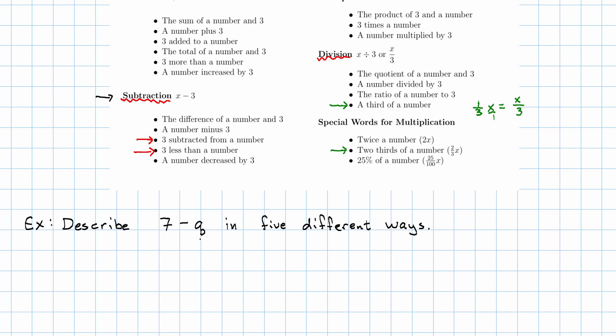So I'm going to say a number for q. The difference of a number and three was x minus three. So this is the difference of seven and a number. First number comes first, second number comes second. Seven minus a number. First number comes first, second number comes second.